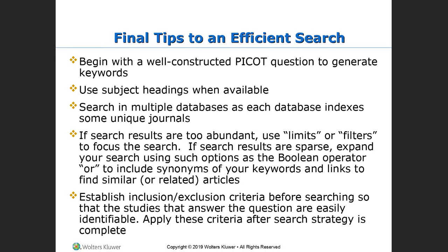Just some final tips on an effective search: remember, it all starts with the PICO-T, and having a good one is one of the most important things to making your search successful. Remember to use subject headings when available and search multiple different databases, because each database will have unique journals you may not have found before. Remember to use limits or filters if you have too much information, or use OR and AND to get things more relevant to you. You also want to establish inclusion and exclusion criteria before searching, so that studies answering the question are easily identifiable, and apply these criteria to the search strategy every time to keep that system going.